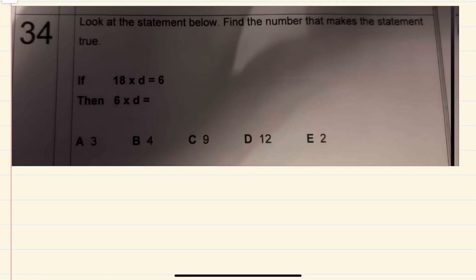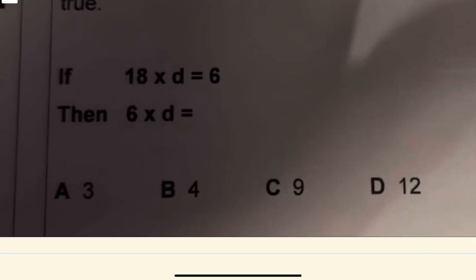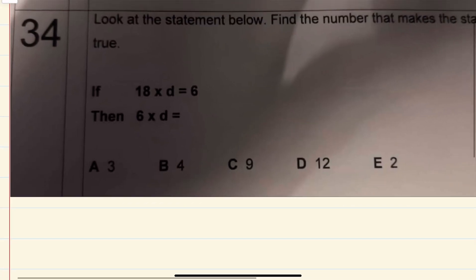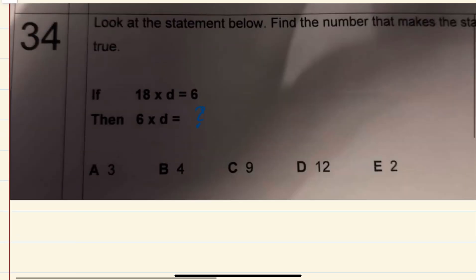Right, this question says look at the statement below, find a number that makes the statement true. So it says here, if 18 times d is equal to 6, then 6 times d equals, and I'm guessing what they mean by this is you're to find what this thing is equal to.